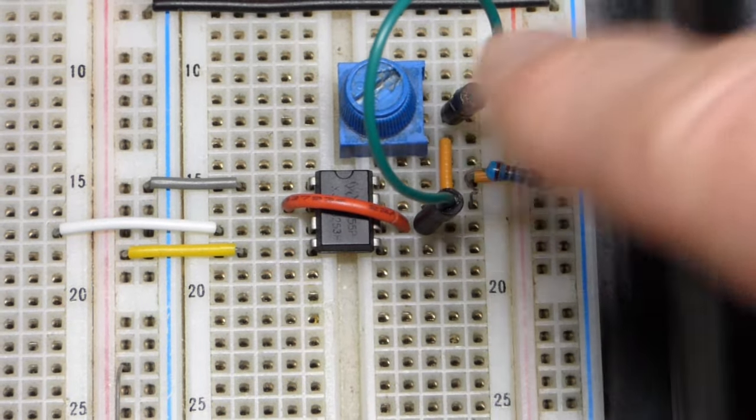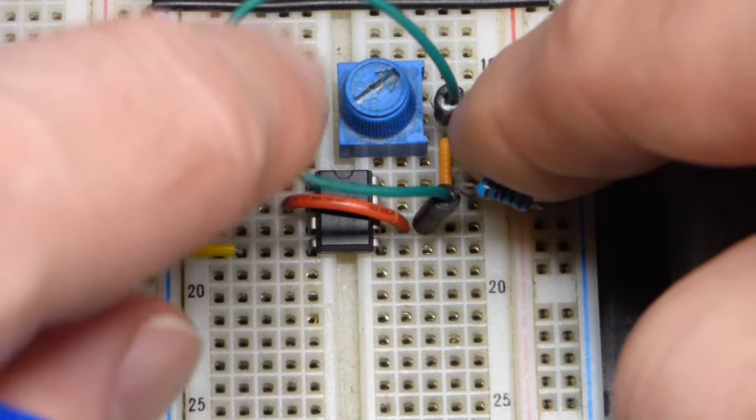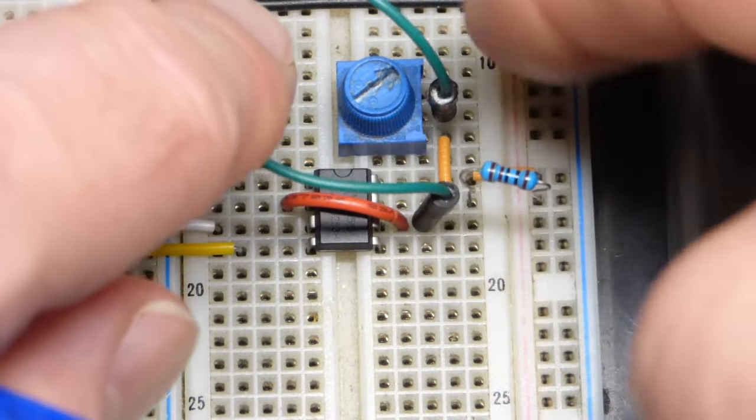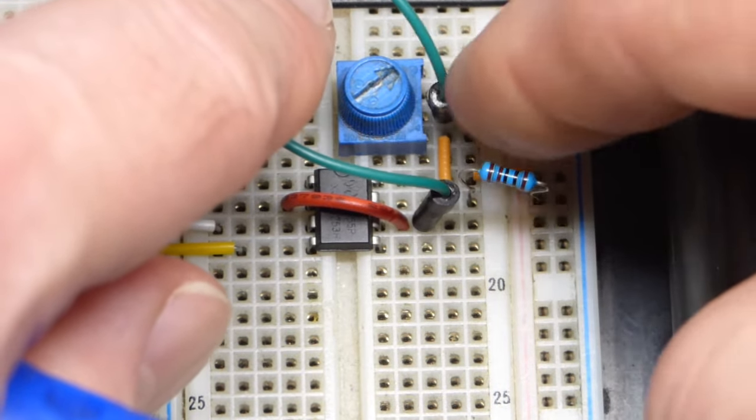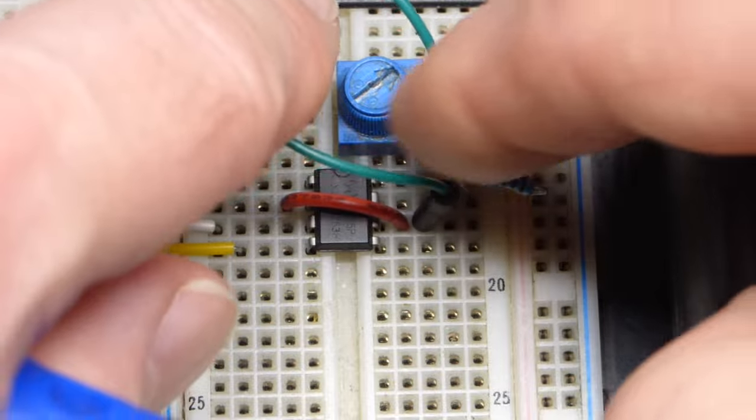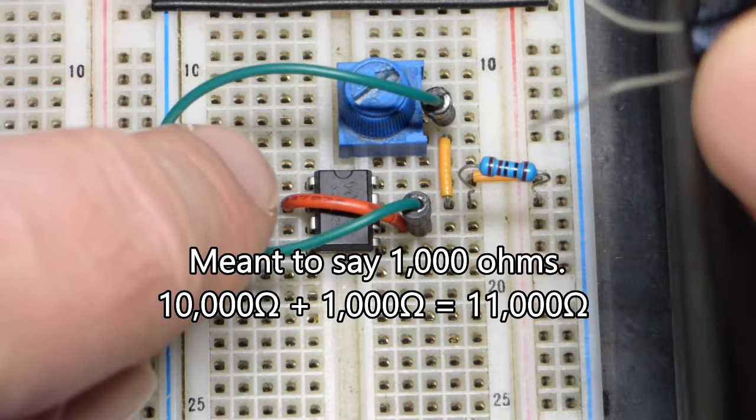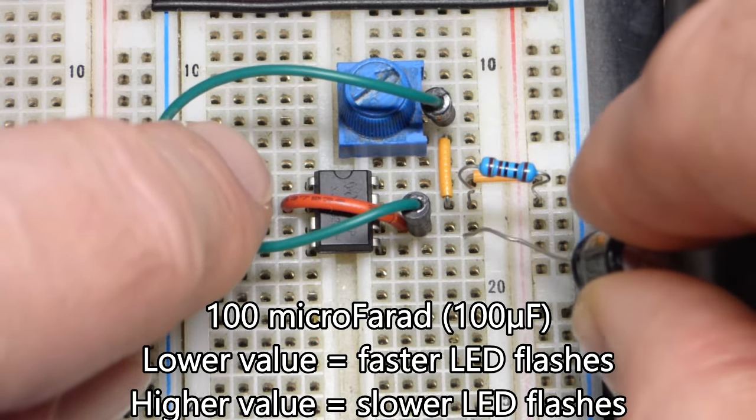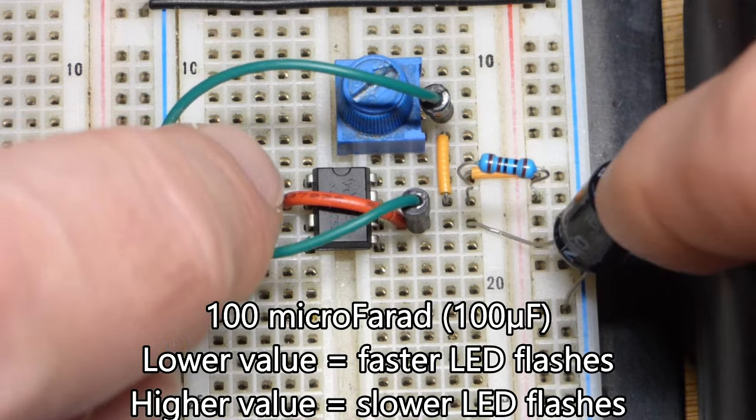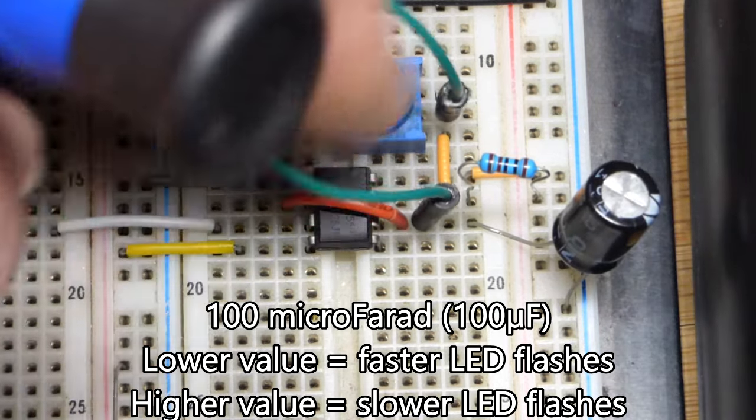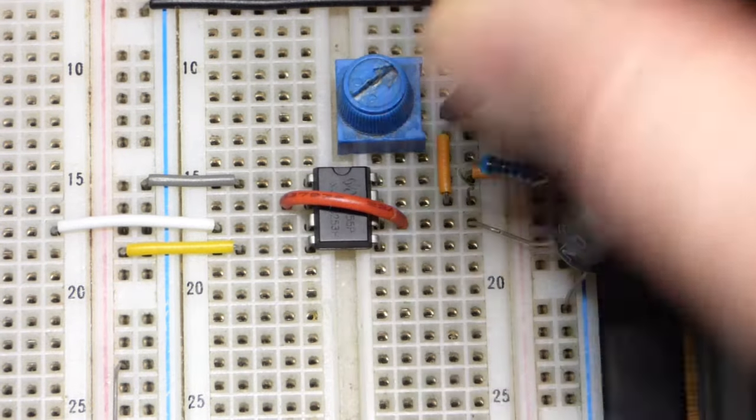So right now it's set to 10,000 ohms. So you can see we got the resistor coming to the jumper, going up there to the variable resistor. Now that we have it set to 10,000 ohms, that means it has to go through 10,000 ohms of resistance. So while charging, 10,100 ohms of resistance. Hopefully that makes sense. Now we grab the capacitor and that will determine how long it takes the capacitor to charge those two together.